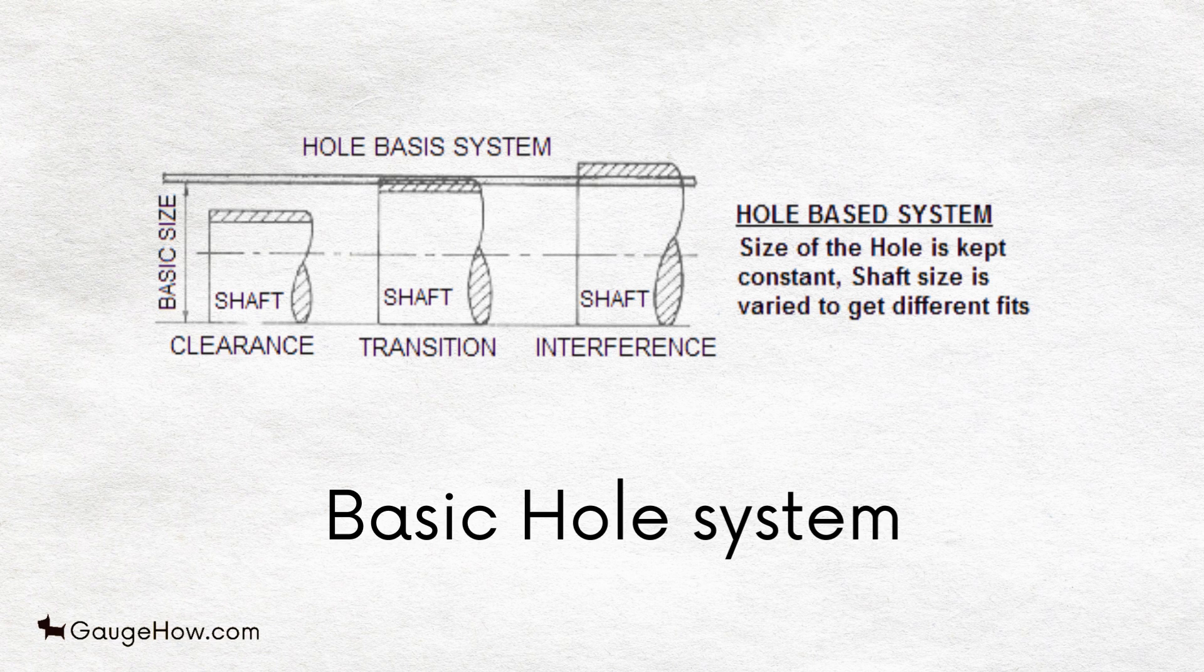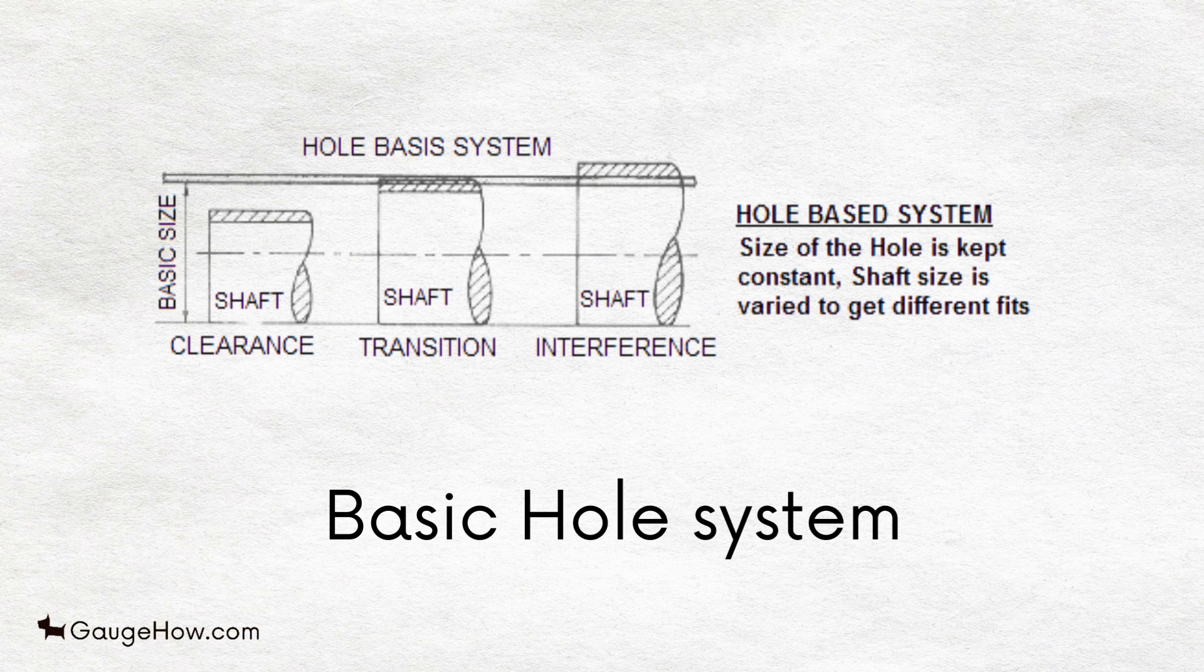Basic Hole System. In this system, the design size of the hole is the basic size from which allowance is subtracted to obtain the diameter of the shaft.